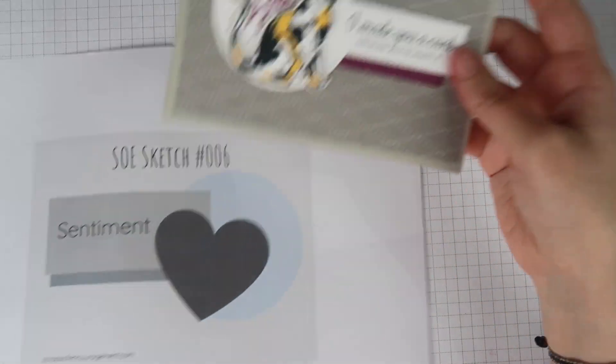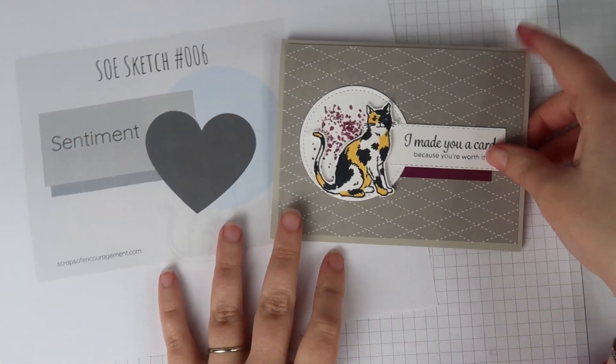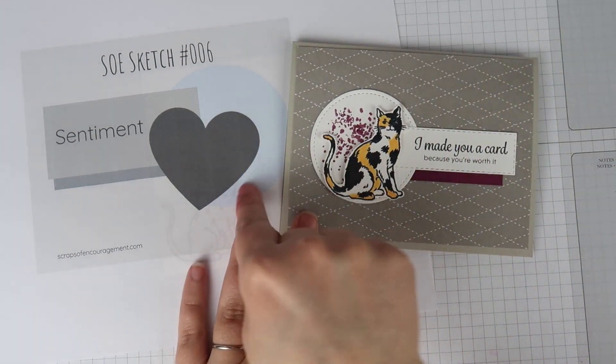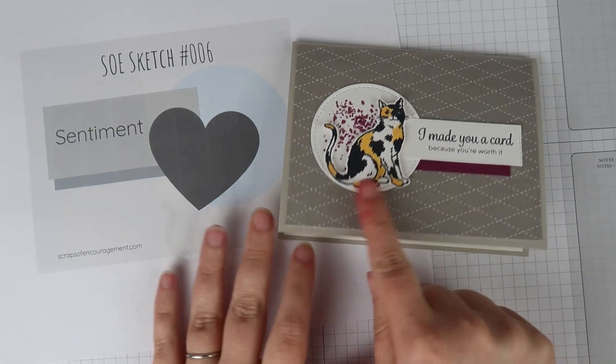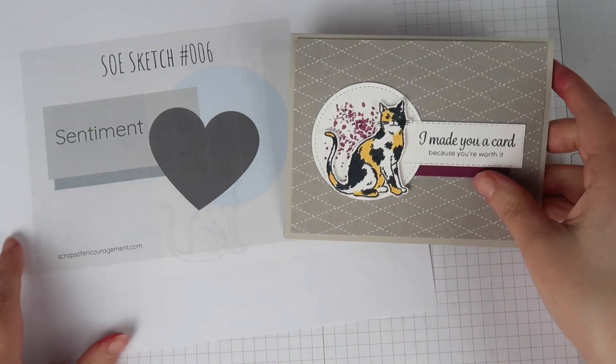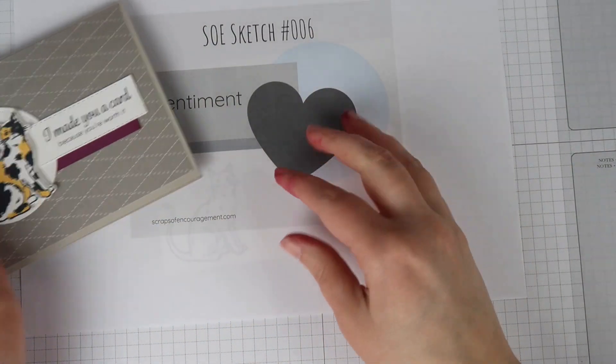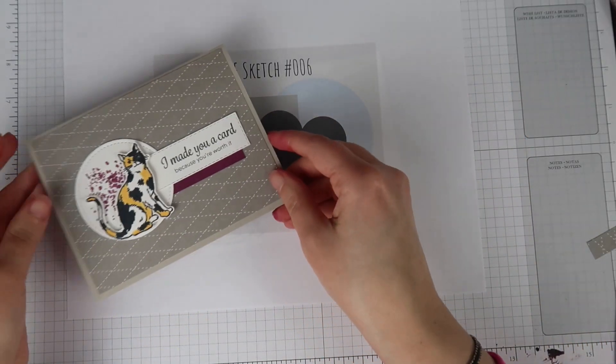You can see here how I flipped it around from the sketch and that's totally fine. You can definitely take these elements and change it. I have my circle. It's a different size. I have my element, my cat instead of a heart. Then I have my sentiment and my border strip there.